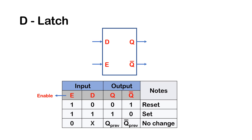Let's see how this works. When E, the enable, is one and D is logic zero, Q would be zero — the D latch is said to have stored a logic zero. Now if we put D as one and maintain E as logic one, then Q would be a one — the D latch is said to have stored a logic one.